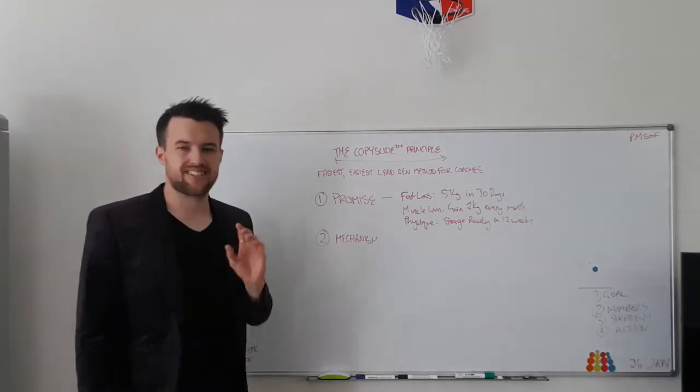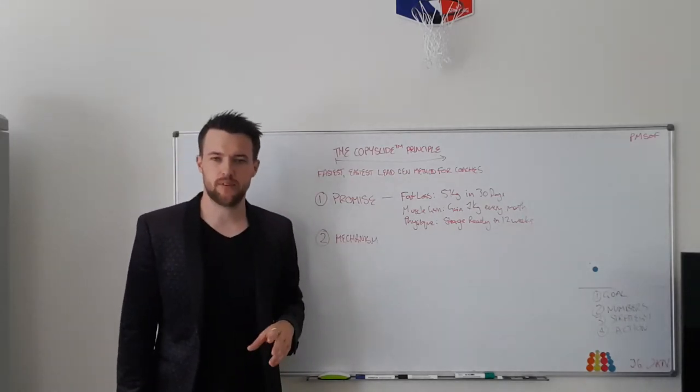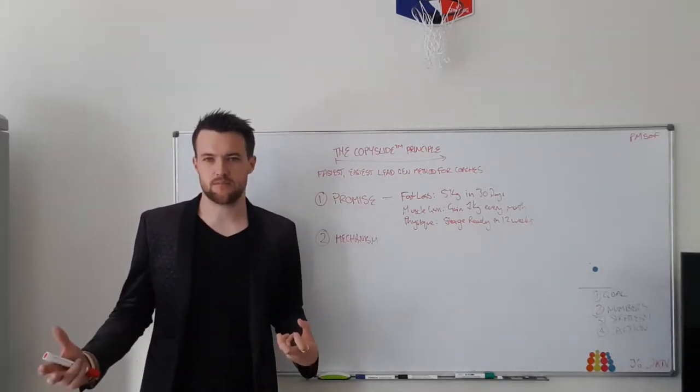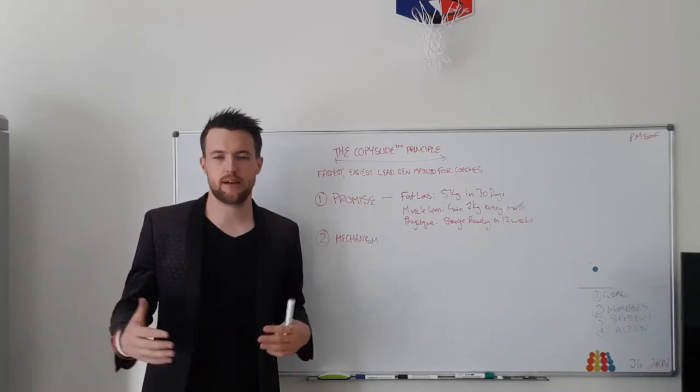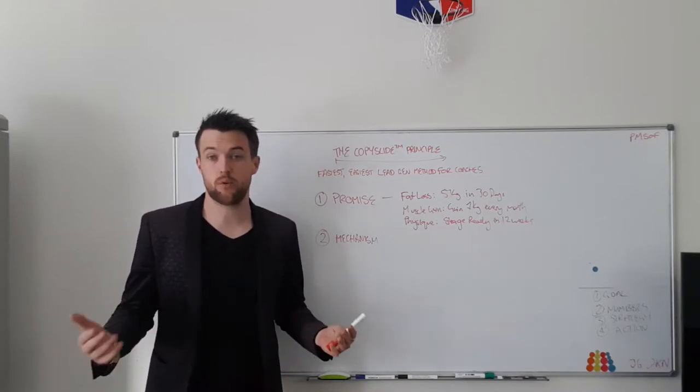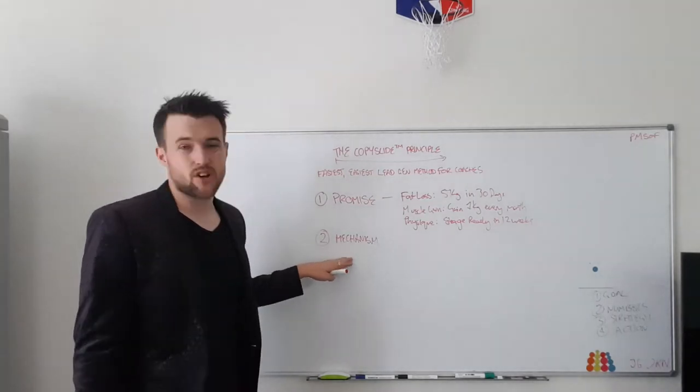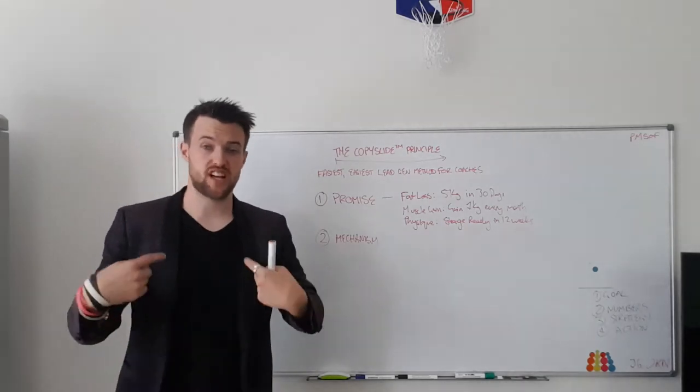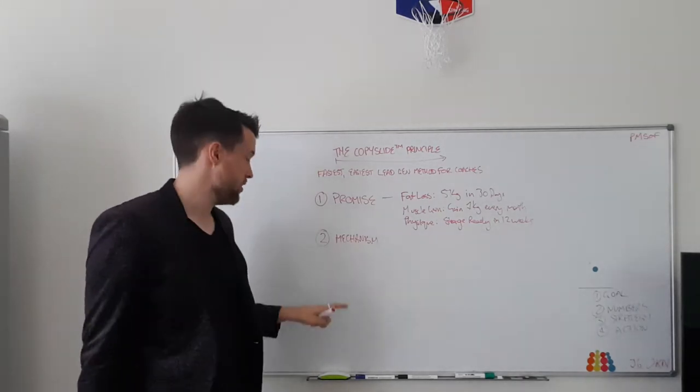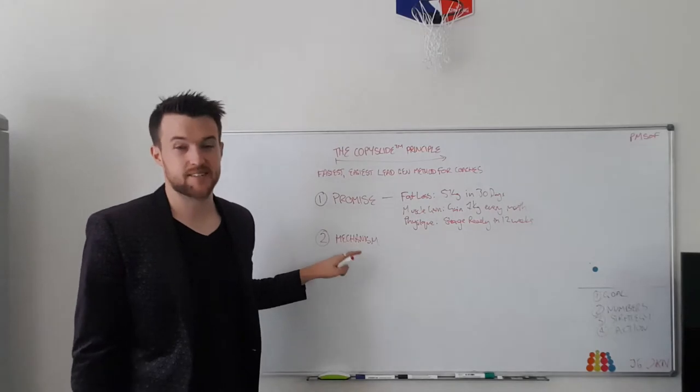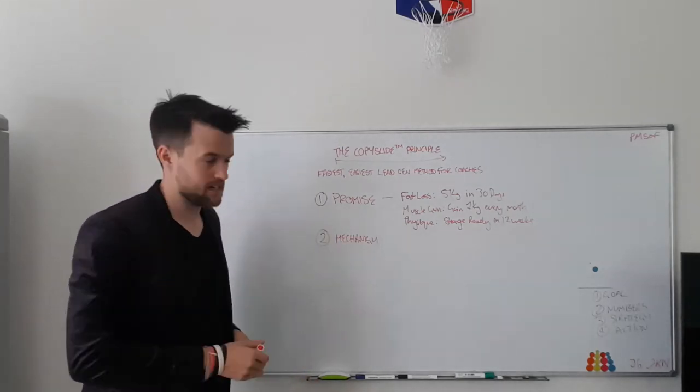But here's the thing about a mechanism. It's not just enough to have a mechanism because anyone can create these mechanisms. But if you just create your three-step method or your ARB method or whatever the hell you want to call it, if I don't know who you are and you're cold traffic, just like I am to you now as you watch this video, why would I trust that this is a mechanism to get me a result? Which is where step three comes in.